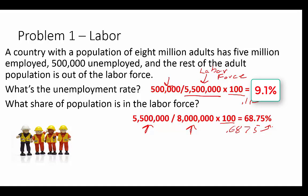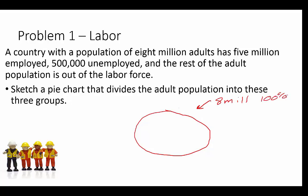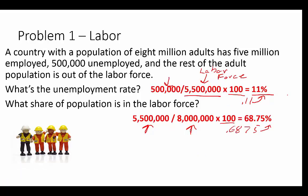Now we're going to build a graph representing this population as a whole — a pie graph. We draw a circle representing 8 million people, which is 100% of the circle. What percent of the circle is the labor force? We calculated that back on the last slide: the labor force is 68.75%, roughly 69%.